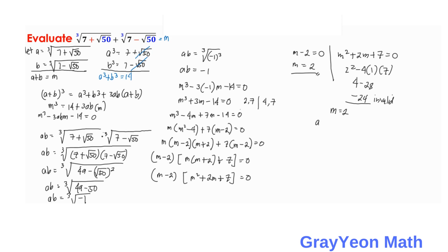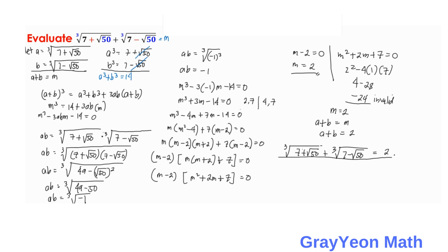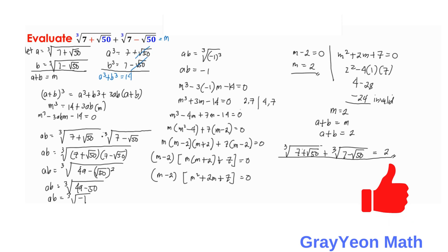Earlier we let a plus b equal m. So the full expression — the cube root of 7 plus square root of 50, plus the cube root of 7 minus square root of 50 — equals m equals 2. So 2 is our final answer. Please like the video, subscribe to the channel, and hit the bell icon for more math tutorials like this.